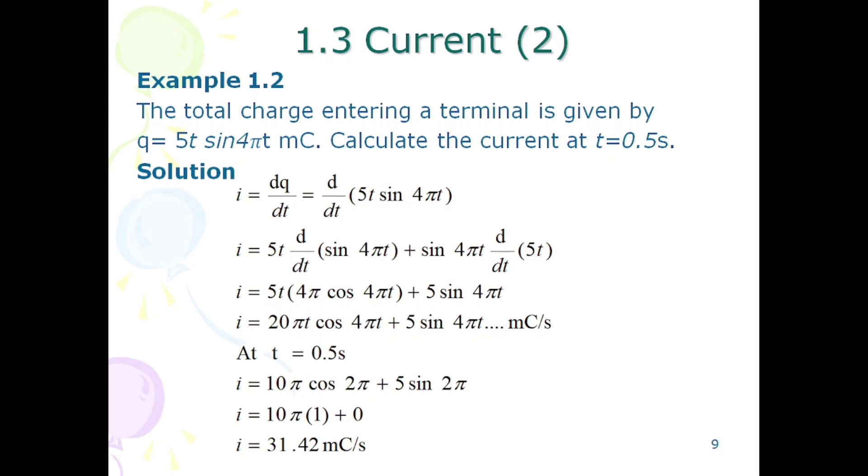The charge function 5t sin(4πt) consists of two functions: 5t and sin(4πt). To find the derivative of a product, we apply the product rule: first as it is times derivative of second, plus second as it is times derivative of first.